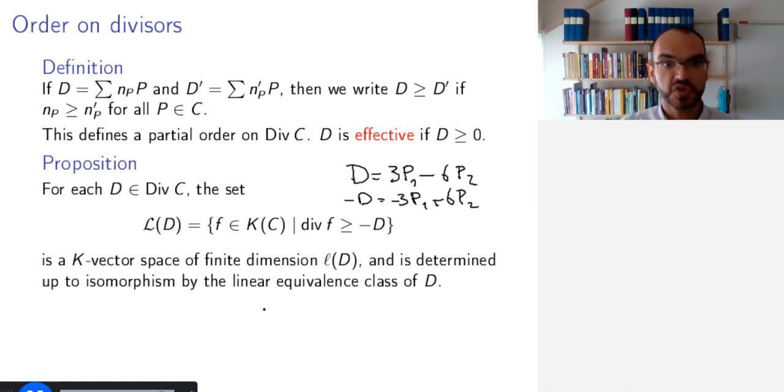The proposition is that this is a K-vector space of finite dimension L(D), and it is determined up to isomorphism by the linear equivalence class of D. The first part I leave as an exercise. To see that it is determined by the linear equivalence class, assume that I have a different divisor, D', that is linearly equivalent to D. So, it's D plus div(G) for some function G.